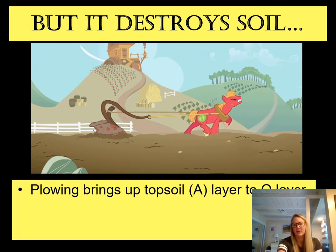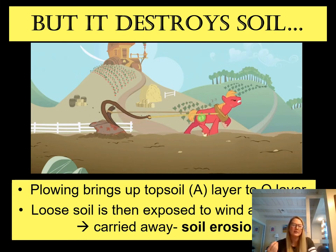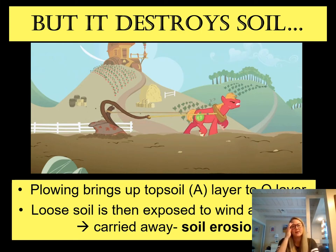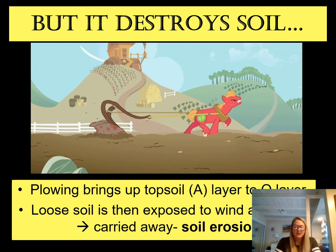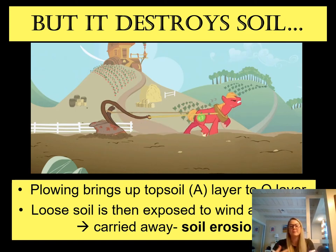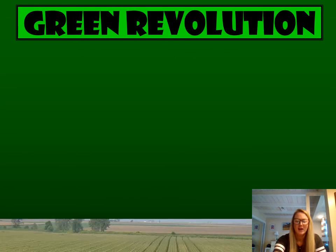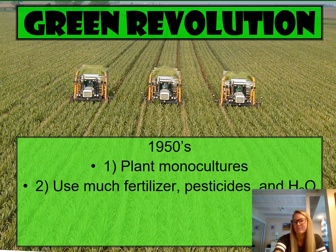One main problem with high input farming is that it destroys the soil. A lot of nutrients are in the A horizon, and to access them farmers have to plow — they dig up the A horizon and bring it to the top. When seeds are planted, they have access to those nutrients, but plowing loosens the soil. If wind or water comes along, it can easily wash the soil away, causing soil loss and nutrient loss.